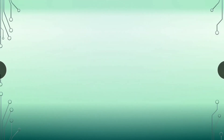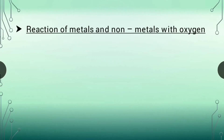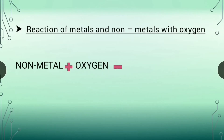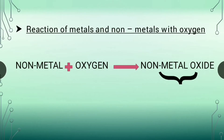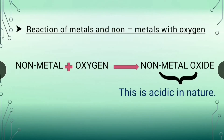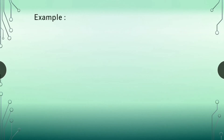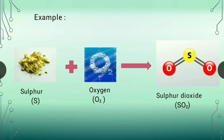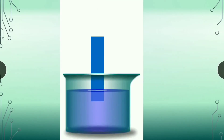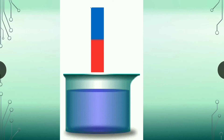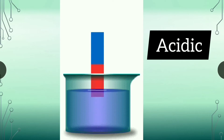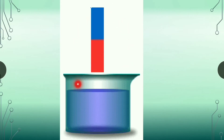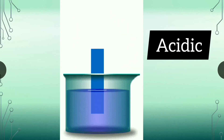Now let's know about how non-metals react with oxygen. When a non-metal reacts with oxygen, it forms a non-metallic oxide, which is acidic in nature. For example, when sulfur reacts with oxygen, it forms sulfur dioxide — a pungent-smelling gas. When acidic oxides dissolve in water, they form acids, which turn blue litmus red, showing that non-metallic oxides are acidic in nature.